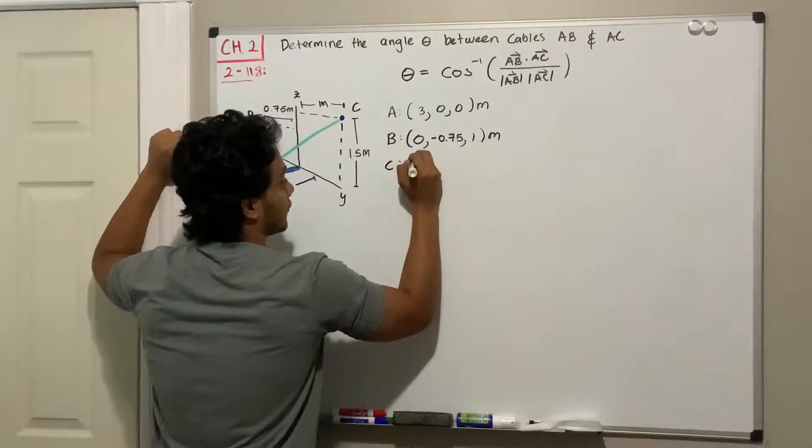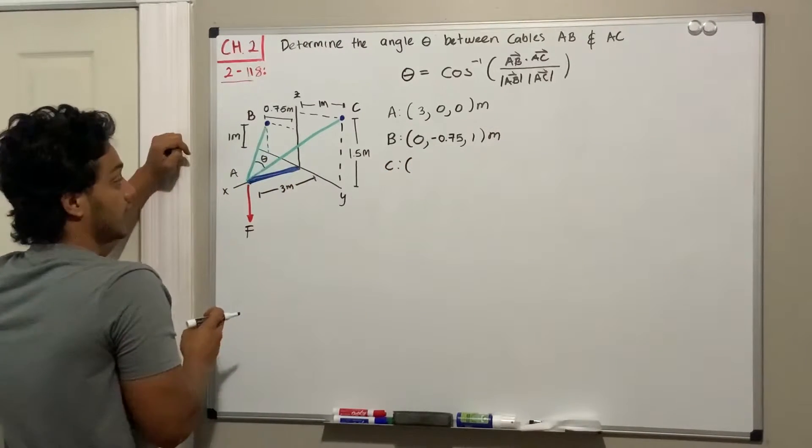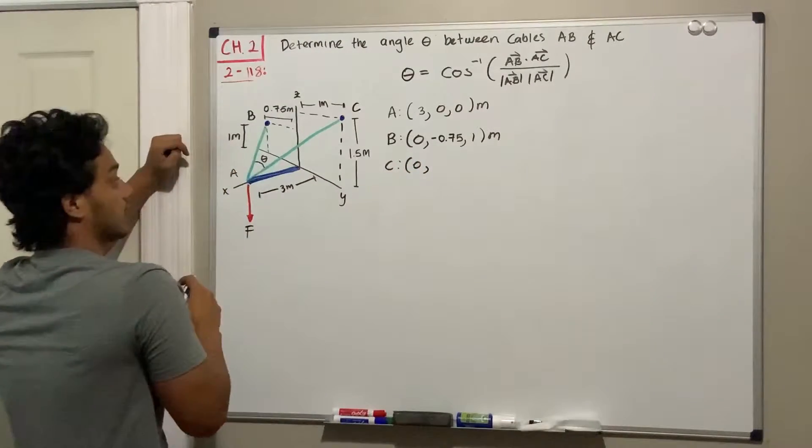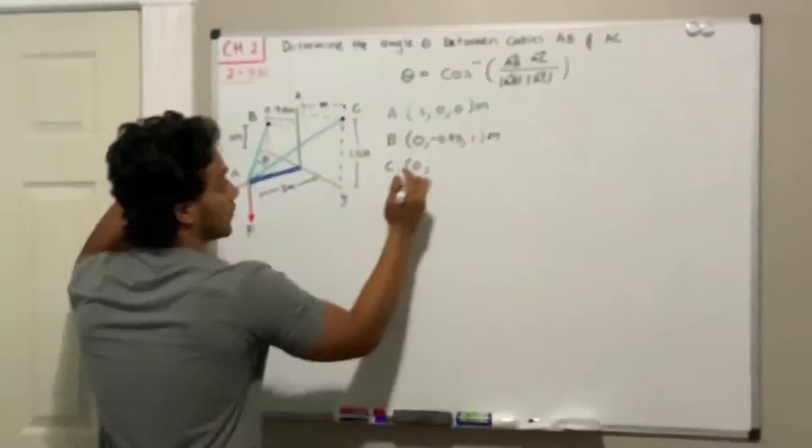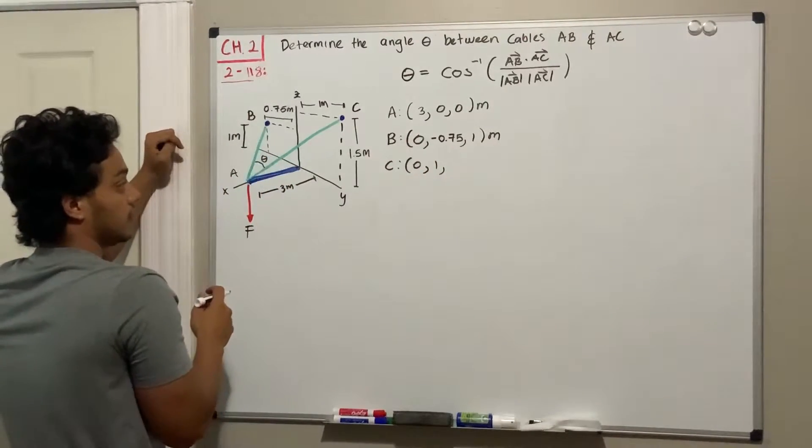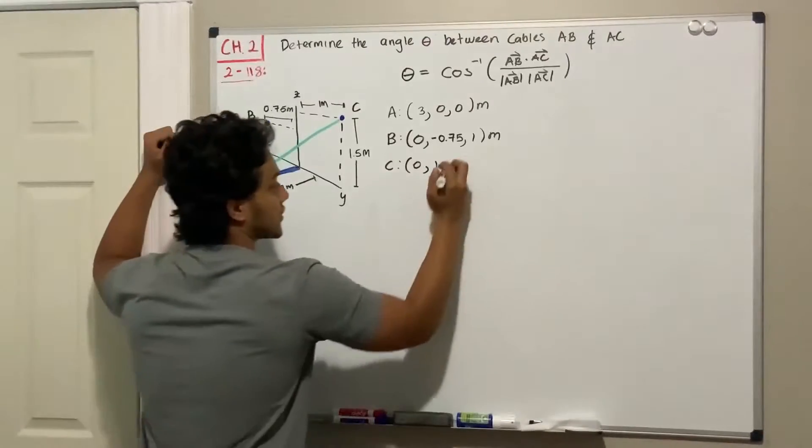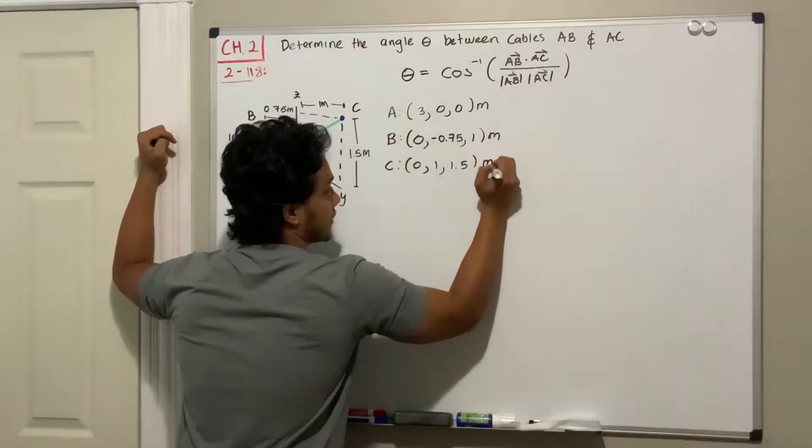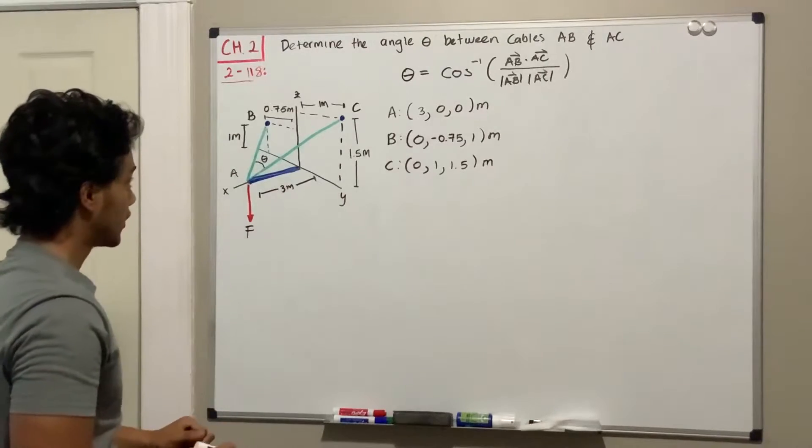For C, we got zero in the x-axis. In the y-axis, we got one meter, one positive meter. And then in the z-axis, we got 1.5. All this is in meters. So let's